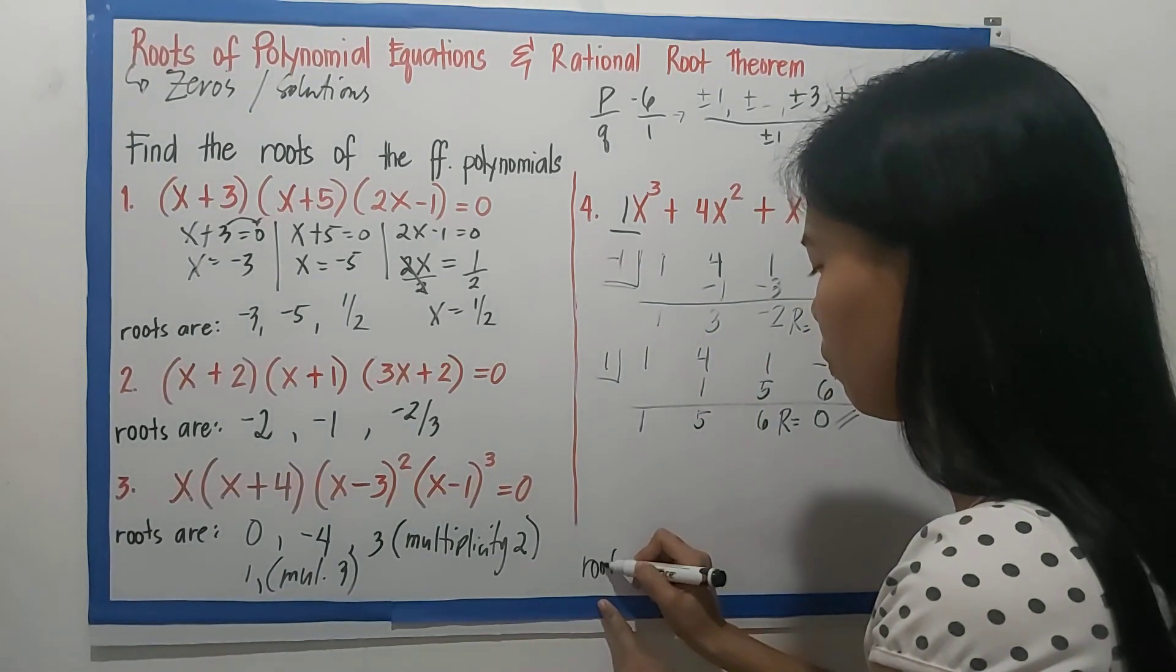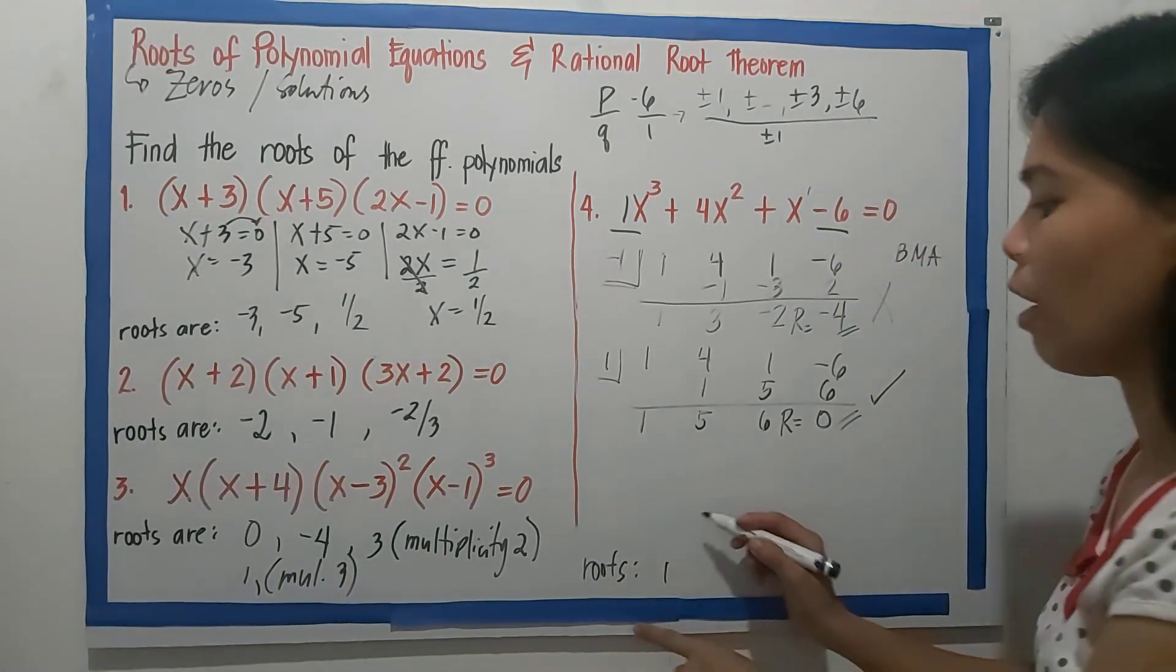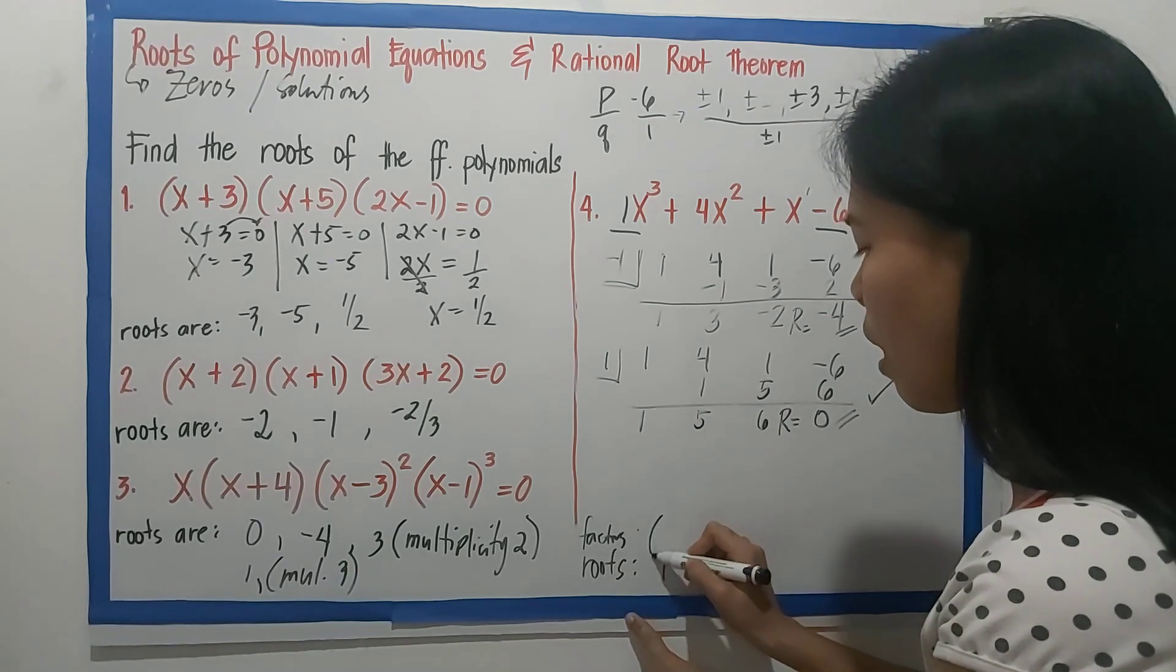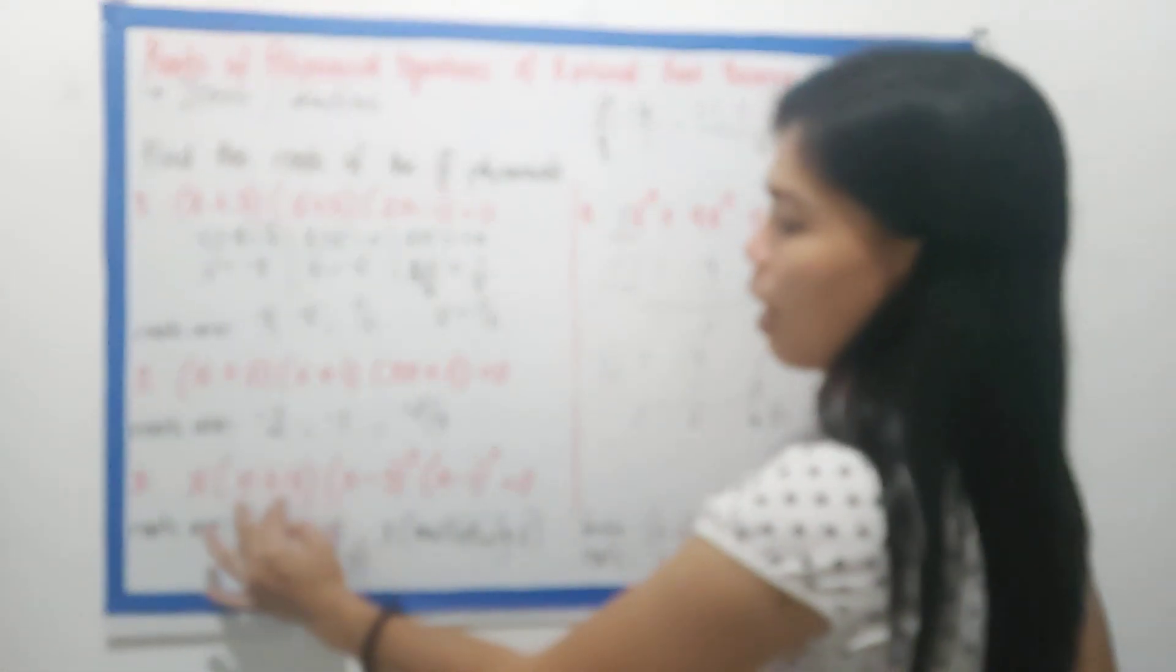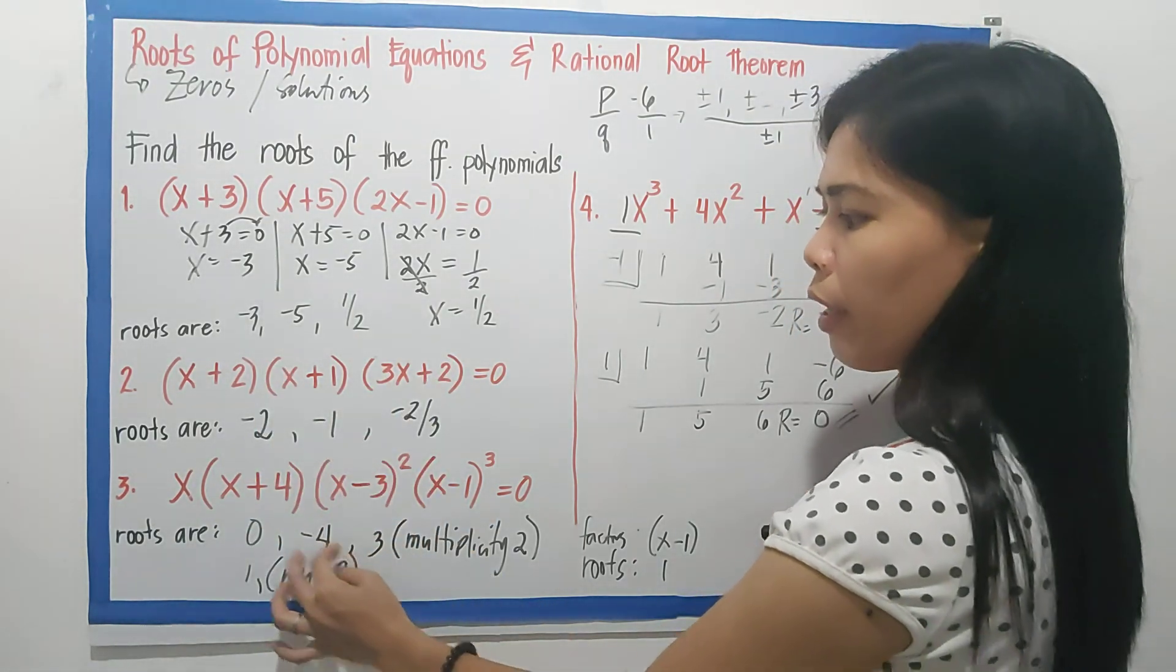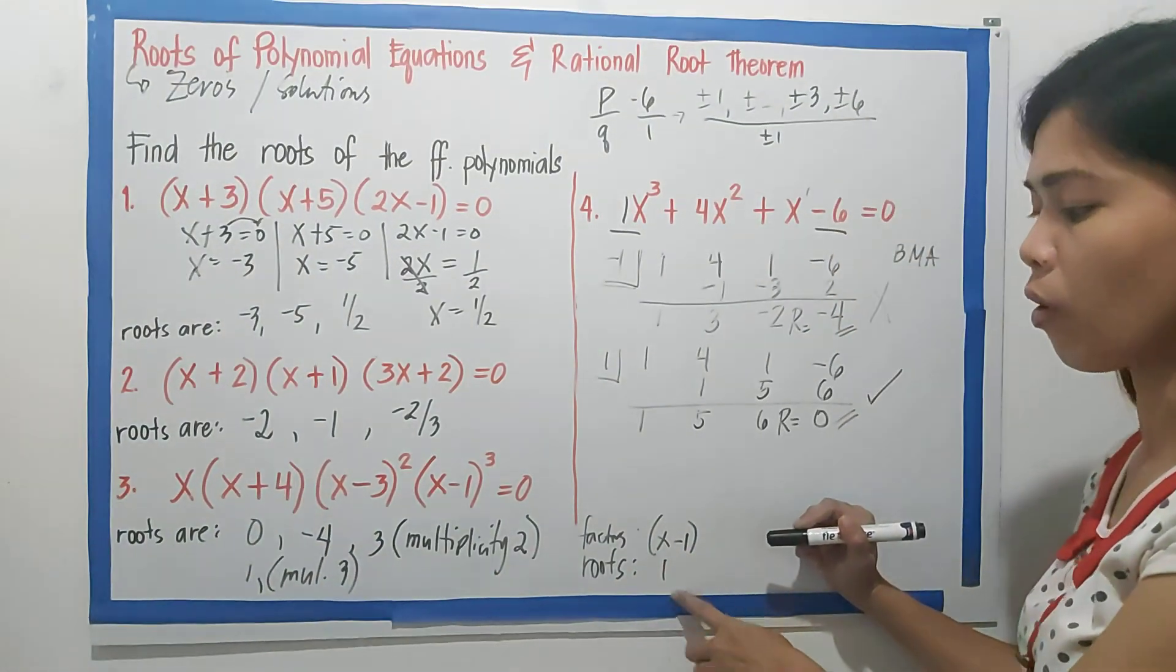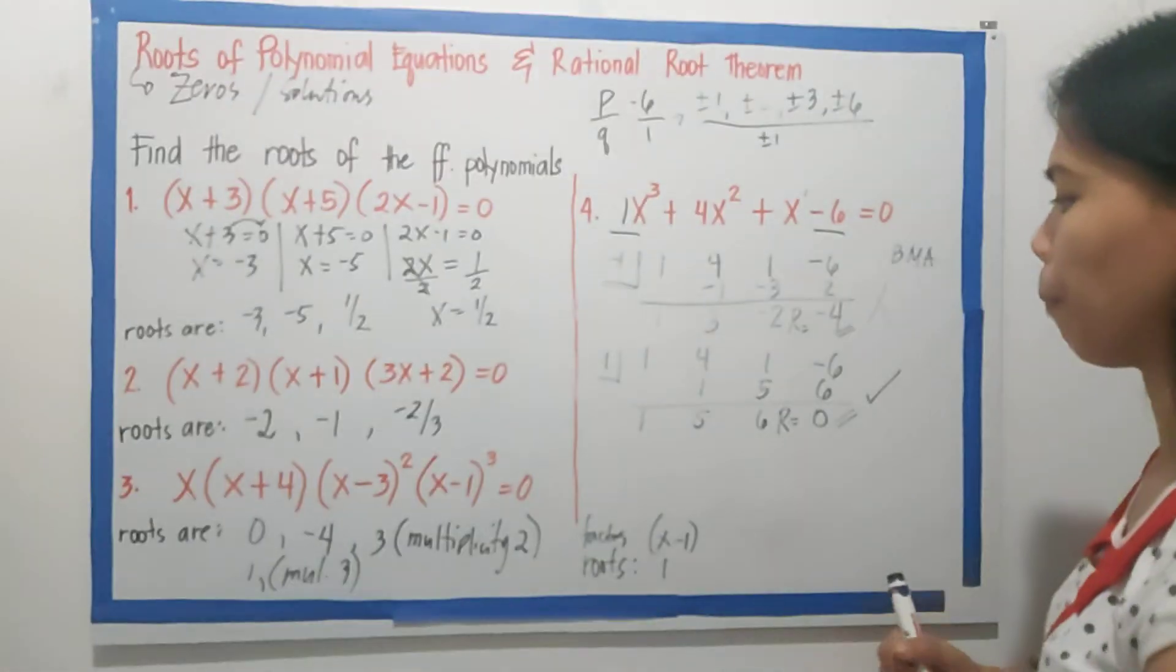So we have one root now. So, 1. If 1 is our root, of course the factor would be x-1. Why? As you can see, earlier we had x+4. The root is -4. So, same thing, if -4 is the root, x+4 is the factor. So, here we have root of 1. So, our factor is x-1. I hope you see the pattern there.